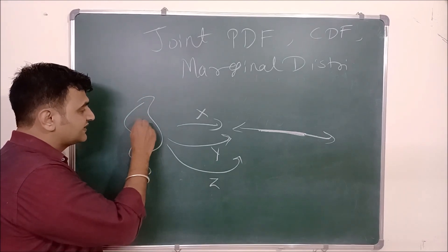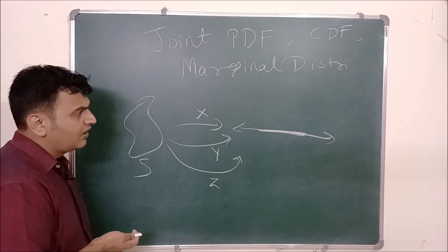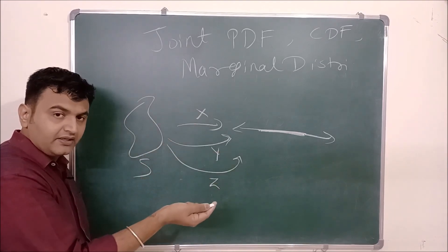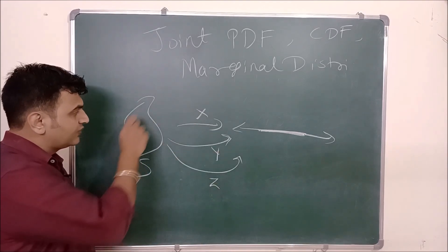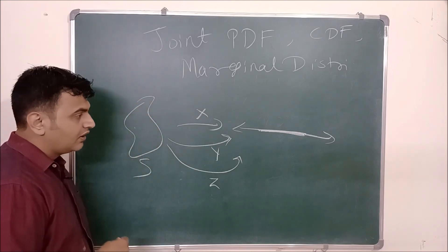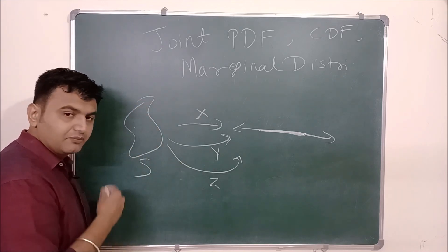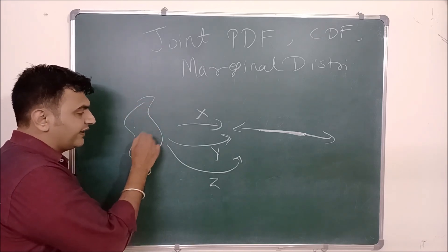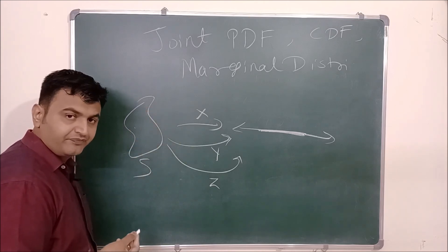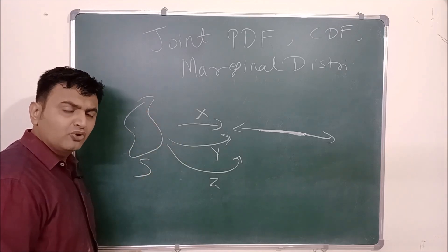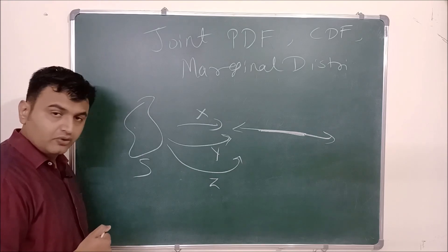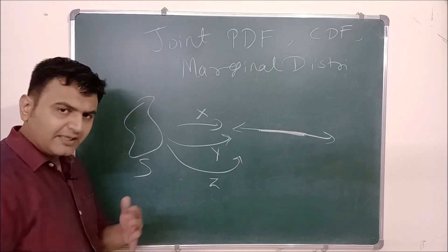Suppose this is a population. X takes an element and gives you the height — X will take all possible heights from a certain population. Y is suppose the weight — it gives all possible weights for all the elements. So one can have more than one random variable on a given sample space, same as with the PMF.